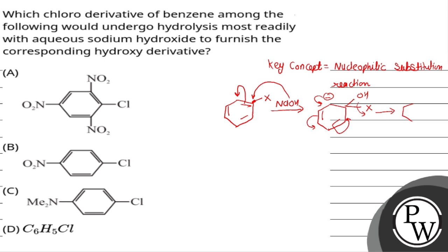The electron density keeps delocalizing, and finally X leaves. In this reaction, the first step is the RDS — it is slow — meaning the rate of reaction depends on this step. In this step, the nature of X and the nature of the substrate matter. The better the electron-withdrawing group X is in the substrate, the more it pulls electron density, making the carbon center more electrophilic.